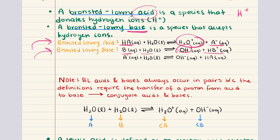The Bronsted-Lowry definition has several advantages. First, it's not limited to aqueous solutions. For example, ammonia, NH3, and fluoride ion are both Bronsted-Lowry bases because they can accept a proton, even though they do not produce hydroxide ions in aqueous solutions. Second, it includes more chemical species. For instance, water can act as both a Bronsted-Lowry acid by donating a proton and a Bronsted-Lowry base by accepting a proton, depending on the reaction context.